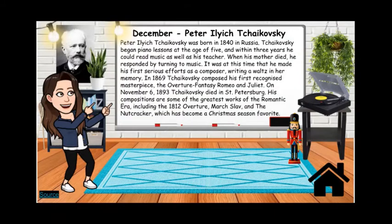Let's take a moment to learn about him now. This month's Composer of the Month is Tchaikovsky. Tchaikovsky was born in 1840 in Russia. Tchaikovsky began piano lessons at the age of five, and within three years he could read music as well as his teacher. When his mother died, he responded by turning to music. It was at this time that he made his first serious efforts as a composer, writing a waltz in her memory. In 1869, Tchaikovsky composed his first recognized masterpiece, the Overture Fantasy, Romeo and Juliet.